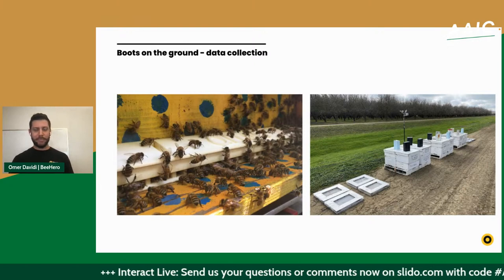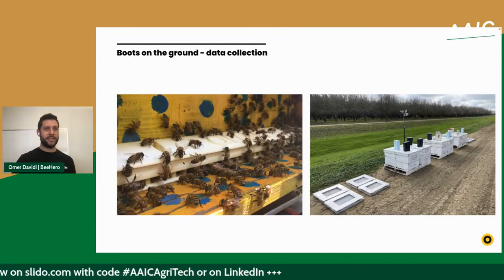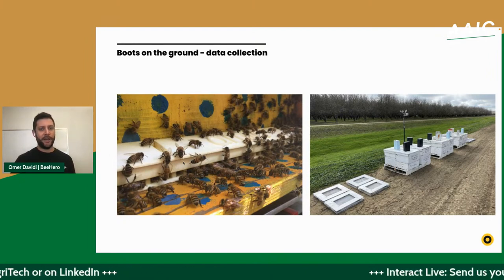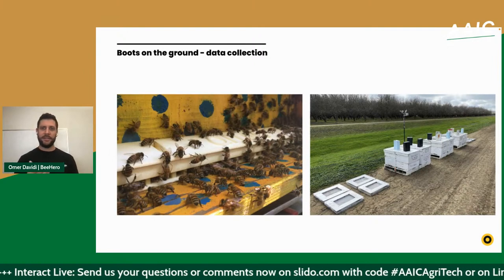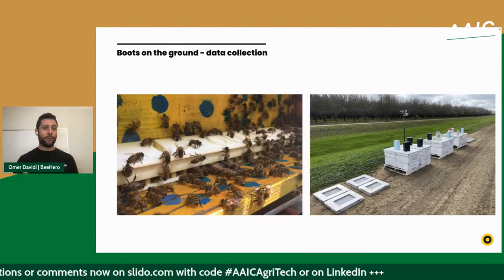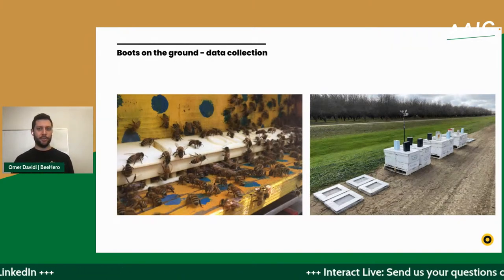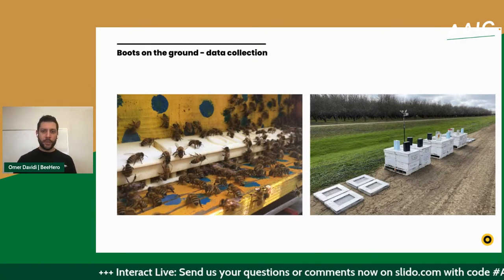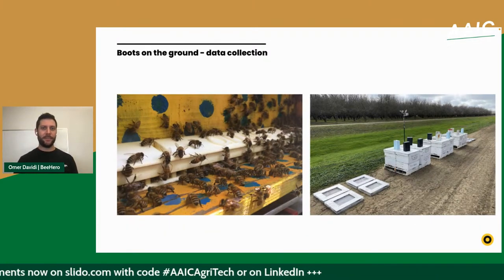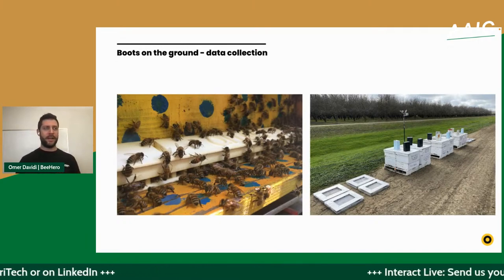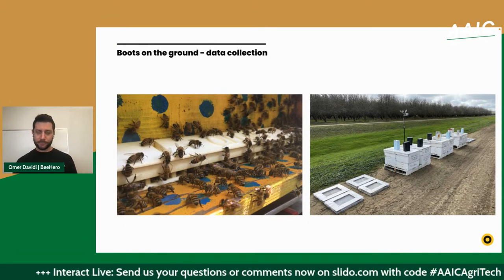We started by building bee labs in different locations, collecting data at the individual bee level. What you can see is a bee counter attached to almost 1,000 hives, allowing us to understand what's happening at the level of a single bee trip. We have scales to understand the nectar flow and foraging activity, and in-hive sensors to collect data — all to scientifically collect and label data. Every time you open a hive, you affect the superorganism, and that affects your ability to build and deploy models.